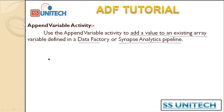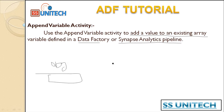For example, here we will be having an object type variable and that variable mainly contains arrays. If we want to append values to that variable, we have to use the append variable activity. For example, let's assume we are having a blob storage and under the blob storage we are having files — like a total of six or seven files.